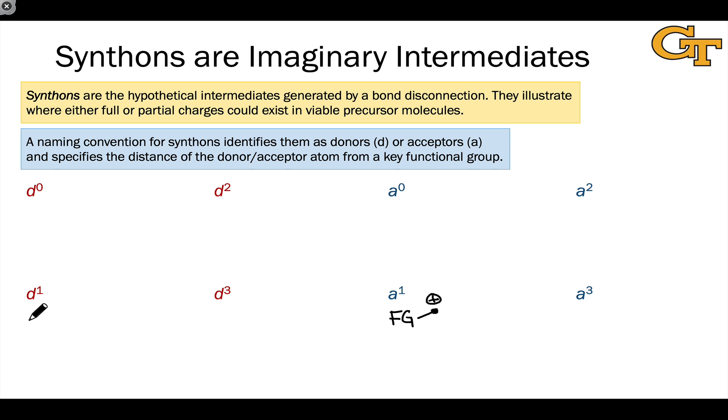A D1 synthon is a structure in which a functional group is linked directly to the donor carbon, which is now negatively charged. And a classic example of a D1 synthon is an enolate. Think about the ester enolate that we were working with on the previous slide. This has a functional group, the ester functional group, directly attached to the alpha carbon, which is negatively charged in an enolate. An example of an A1 synthon would be something like a benzylic carbocation with a phenyl ring stabilizing that positive charge adjacent to the atom bearing positive charge.